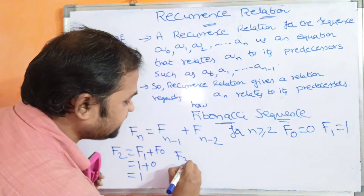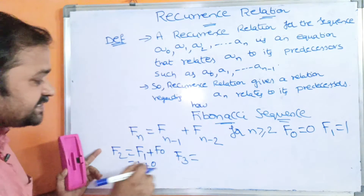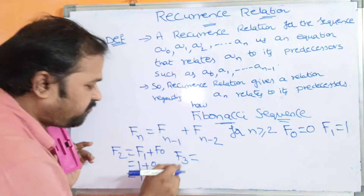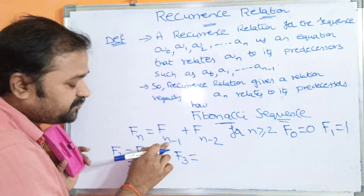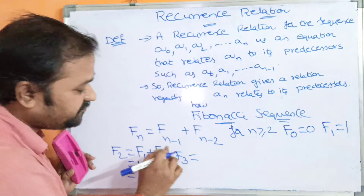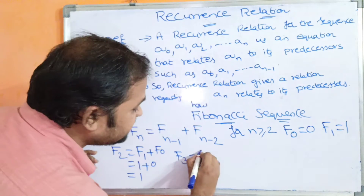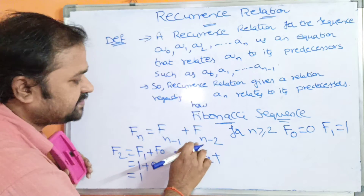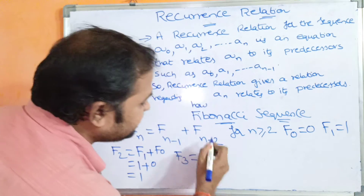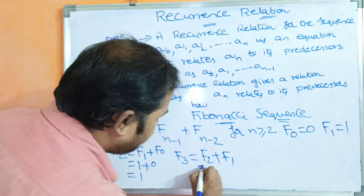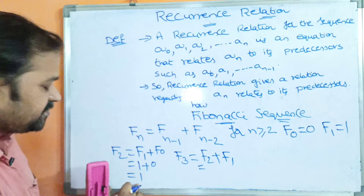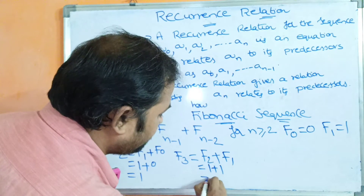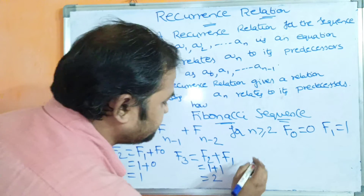Likewise, what is F3? F3 = F2 + F1. Substituting 3 in place of n: 3-1 = 2, so F2, and 3-2 = 1, so F1. F2 + F1 = 1 + 1 = 2.